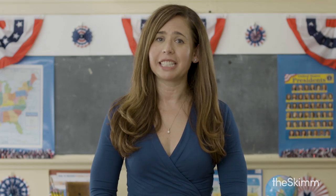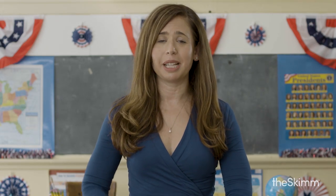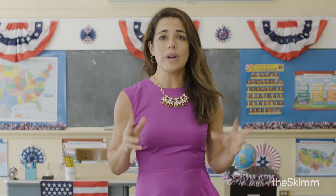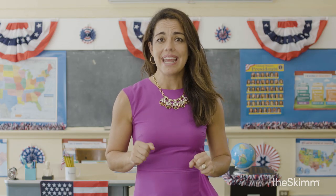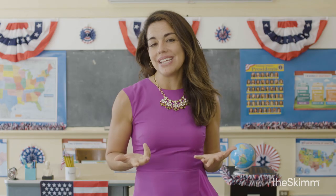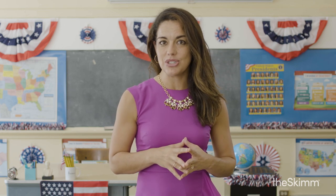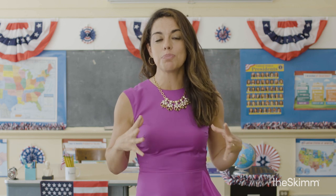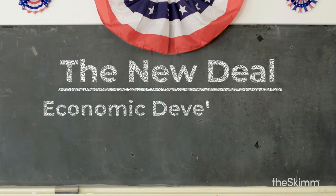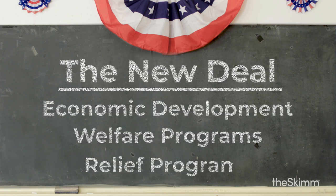Then in 1929, the Great Depression happened and pretty much everybody blamed the Republicans. The economy was devastated, and that devastation allowed Franklin Delano Roosevelt, a Democrat, to come to power in 1932 with his program, the New Deal. The New Deal was FDR's plan to help Americans get out of the Great Depression.